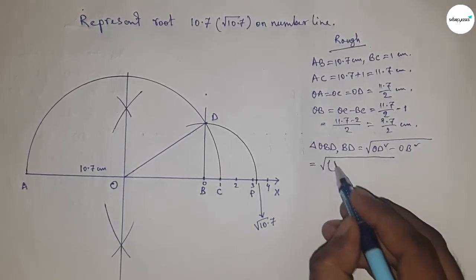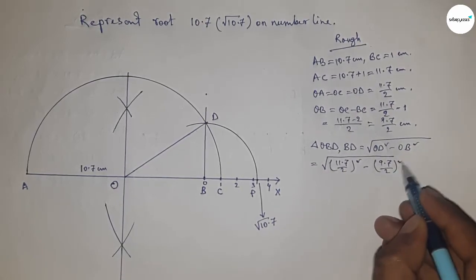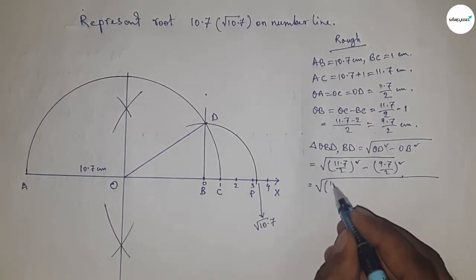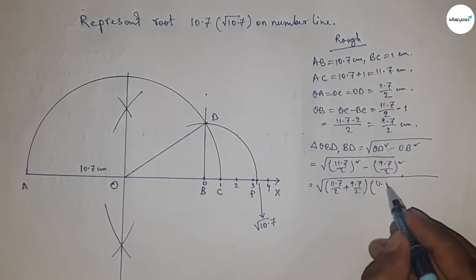Now I'm going to use the formula a square minus b square equal to a plus b and a minus b. So here applying the formula first.